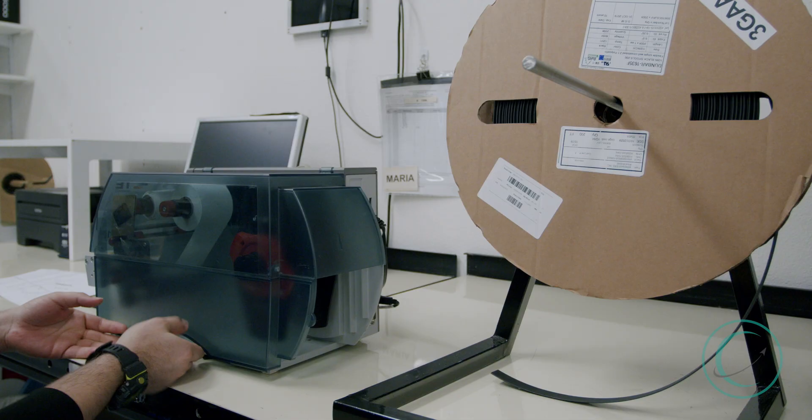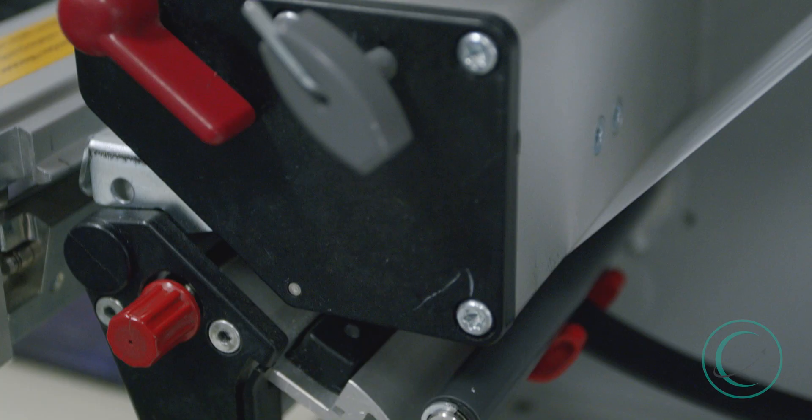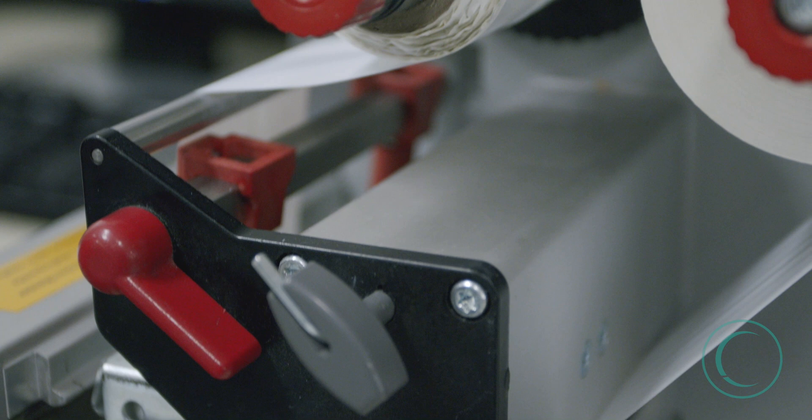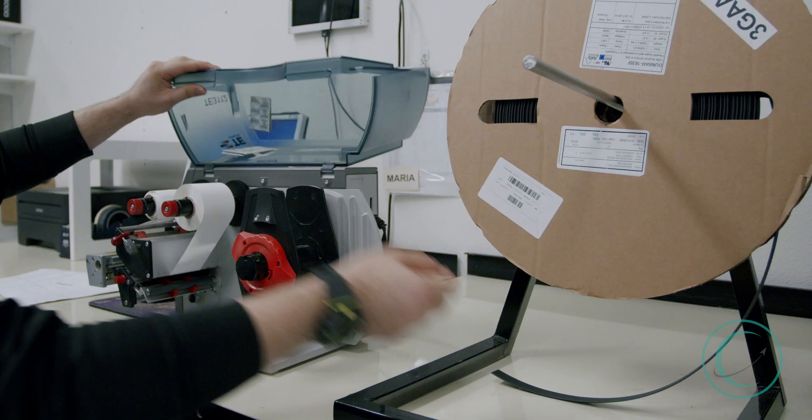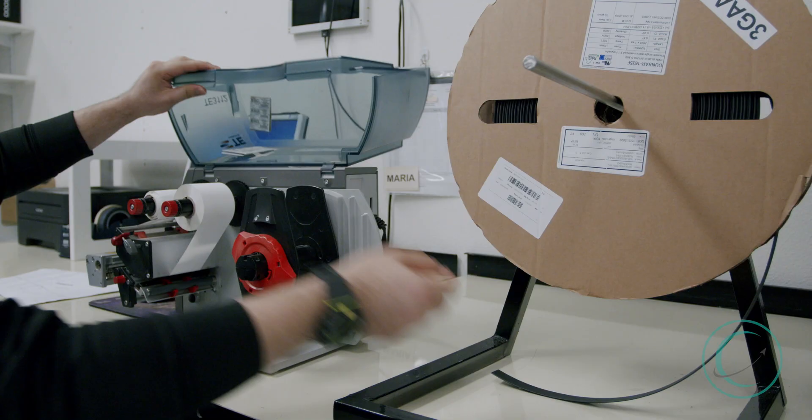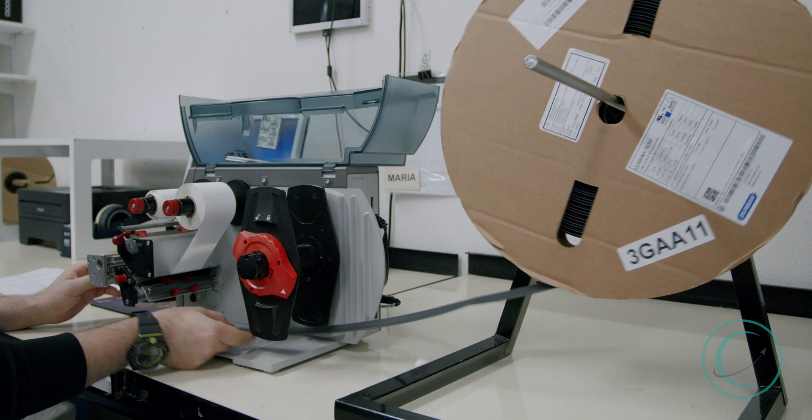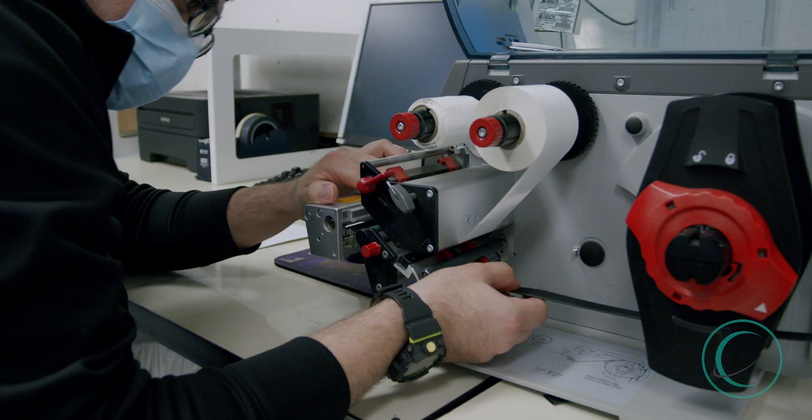The first step in our process is to obtain the information we will be marking on the heat shrink tubing. From there, we will determine the correct data and import it into our system. It is then that the heat shrink tubing can be prepared for marking.